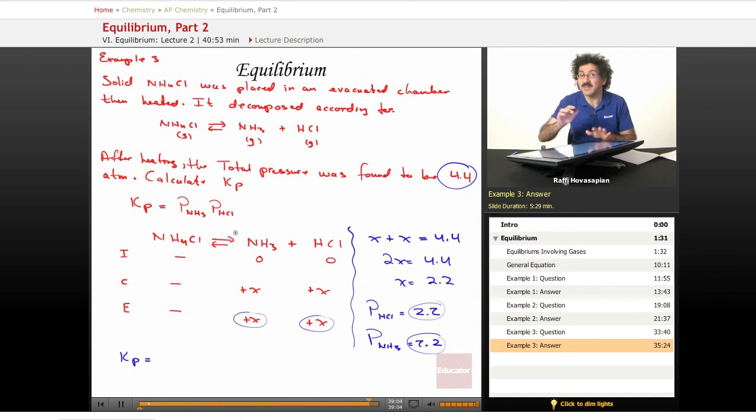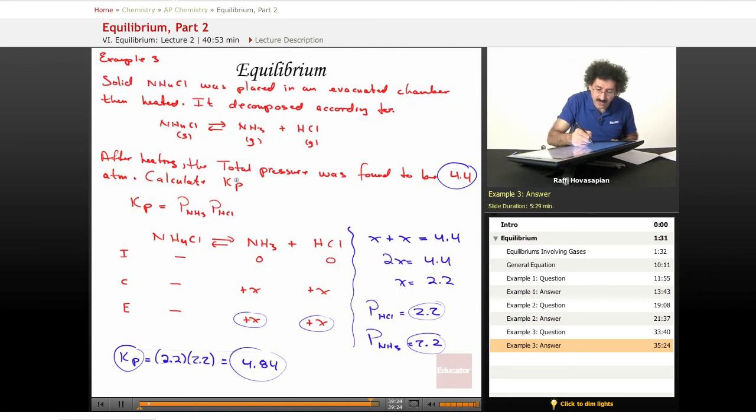Because again, stoichiometric coefficients, you know, they show up in the equation. So write them separately. Write 2.2 times 2.2. Even though they're the same, they represent different species. Don't mix them up. So we multiply that, we get 4.84. That is the Kp. And we double check, calculate Kp. That's what we wanted. We're done. That's it.